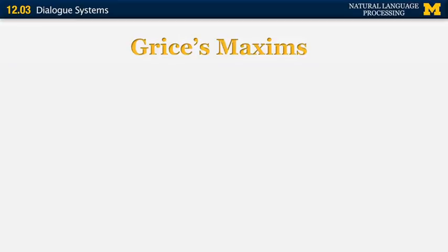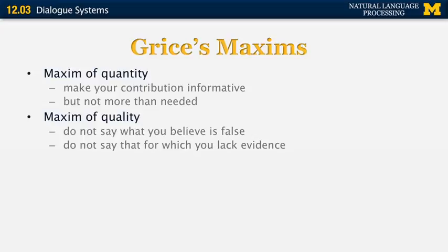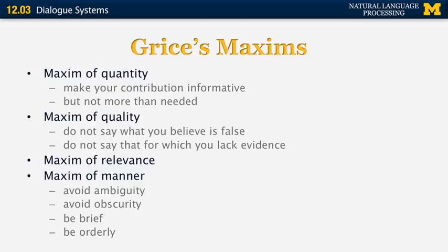Grice's maxims refer to properties of dialogue that make it easier to understand and more logical. The first is the maxim of quantity: make your contribution informative — don't say too much or too little. The second is the maxim of quality: say only things you believe are true and don't say things for which you lack evidence. The third is the maxim of relevance. The fourth is the maxim of manner: avoid ambiguities. Dialogue is a collaborative endeavor, and all participants are expected to make an effort so the other party can understand what is going on.